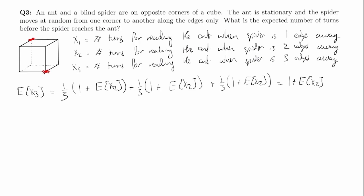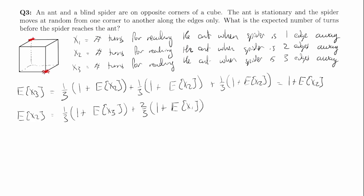Now let's find E[x2]. If the spider is two edges away, in one third of cases he goes back toward the three-edges-away corner — that's one third times one plus E[x3]. In the other two cases he goes to a corner that's one edge away, giving two thirds times one plus E[x1]. So E[x2] equals one third times one plus E[x3], plus two thirds times one plus E[x1].